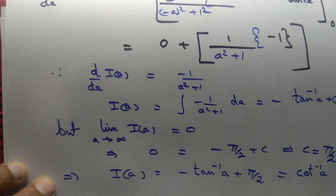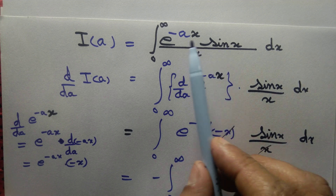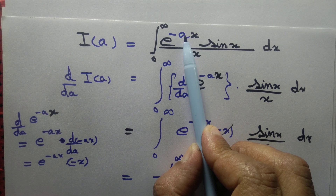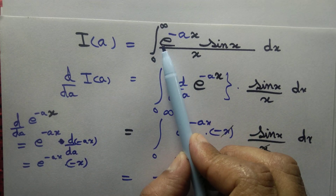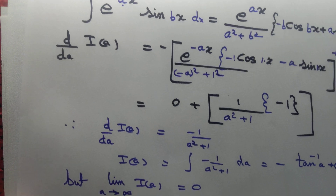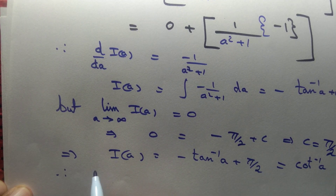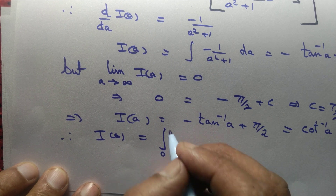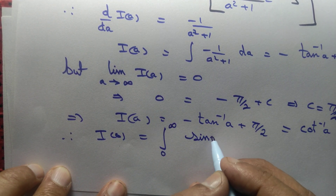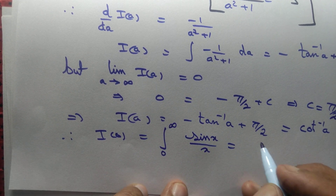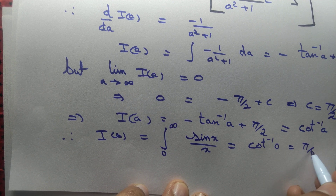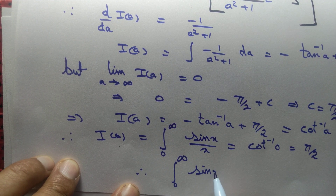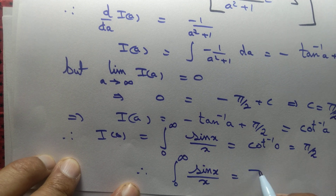For the second part, we want just ∫₀^∞ sin(x)/x dx — without the e^(-ax) factor. Setting a = 0: I(0) = ∫₀^∞ sin(x)/x dx = cot⁻¹(0) = π/2. Therefore ∫₀^∞ sin(x)/x dx = π/2, and we are done.